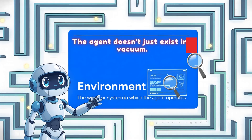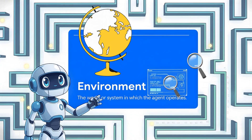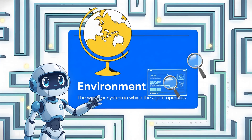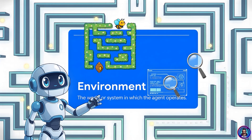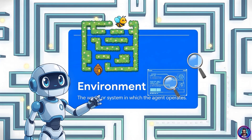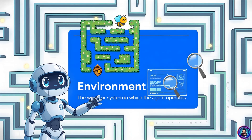The agent doesn't just exist in a vacuum — it operates inside an environment. This is its world, its playground, the whole shebang. For our little robot, the environment is the maze itself: all the open paths, the dead ends, and those pesky walls.